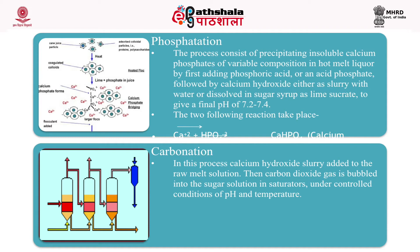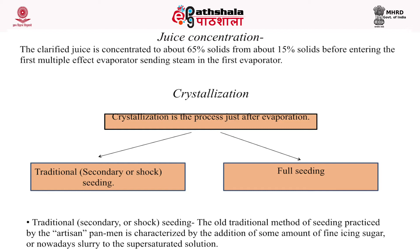In carbonation, calcium hydroxide slurry is added to the raw melt solution, then carbon dioxide gas is bubbled into the sugar solution in saturators under controlled conditions of pH and temperature. Following clarification, the clarified juice is concentrated from about 15 percent solids to about 65 percent solids using a multiple-effect evaporator.